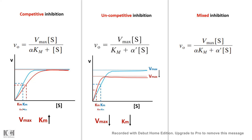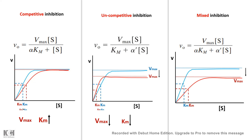For mixed inhibition, there are two factors in the equation: instead of Km there is α·Km, and instead of just [S] there is α'·[S], because there are two components — one for competitive and one for uncompetitive. In this situation, Vmax definitely decreases, but the apparent Km could either increase or decrease, since mixed inhibition is a hybrid of both types.